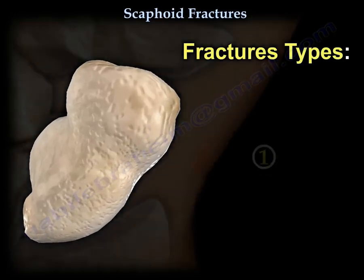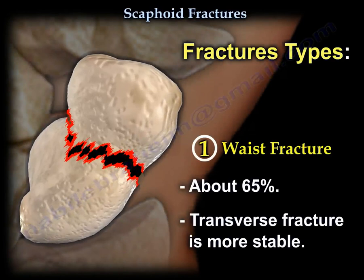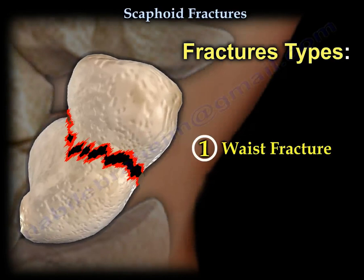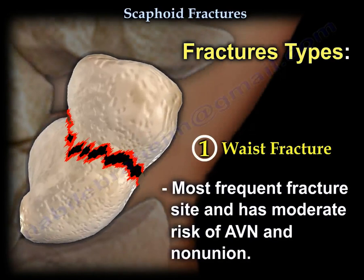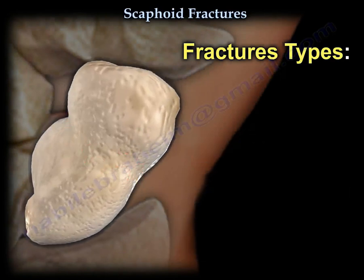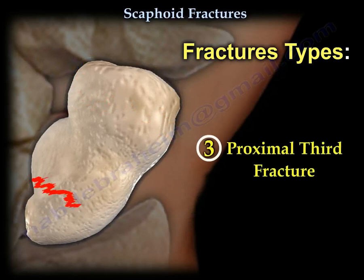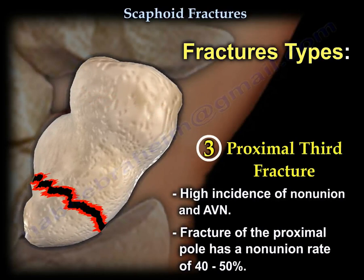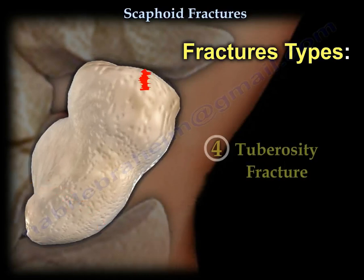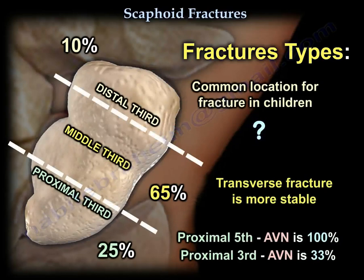Fracture types. Waist fracture is about 65%; a transverse fracture is more stable. It is the most frequent fracture site and has a moderate risk of AVN and nonunion. Distal third fracture is about 10% and is the most common location in children. Proximal third fracture has a high incidence of nonunion and avascular necrosis; the proximal pole has a nonunion rate of 40–50%. Tuberosity fracture is rare. The proximal fifth causes 100% AVN; the proximal third causes 33% AVN.